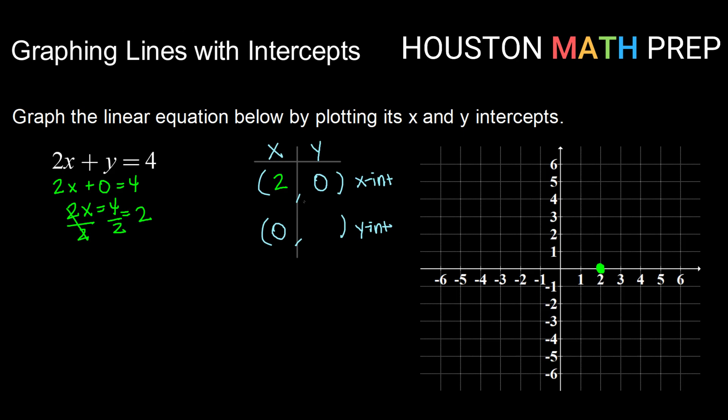Doing the same thing to fill in my y-intercept, I'm going to replace x with zero this time. So 2 times zero plus y equals 4. 2 times zero is of course zero. So zero plus y equals 4. So y equals 4 fills in our y-intercept. That means that our graph crosses through the y-axis at the point 0, 4. Now that we have two points on the graph of our line, we can go ahead and connect through them. And there we have our graph.